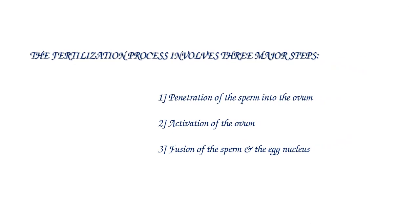The fertilization process involves three major steps: first, penetration of the sperm into the ovum; second, activation of the ovum or egg; and third, fusion of the sperm nucleus and the egg nucleus.